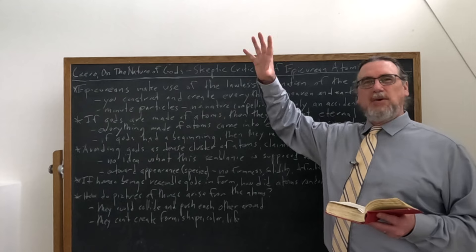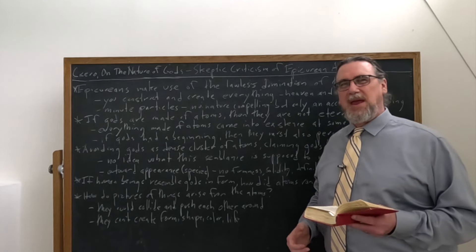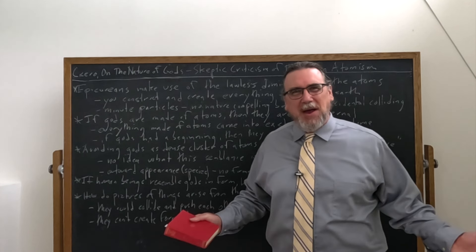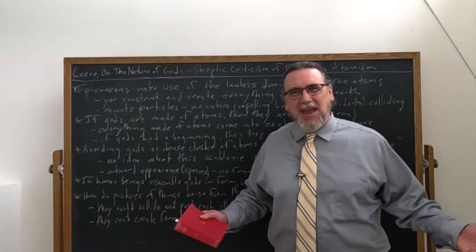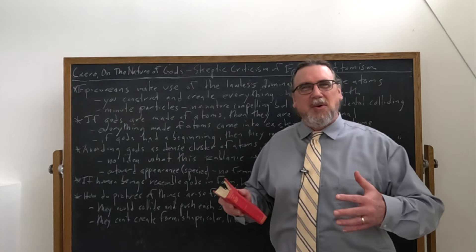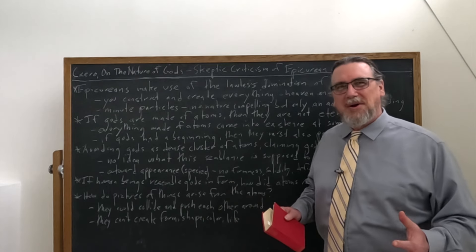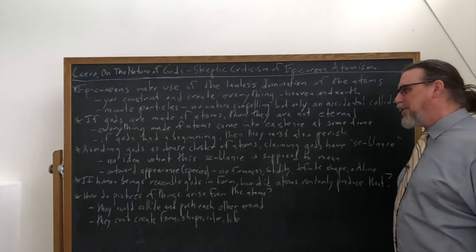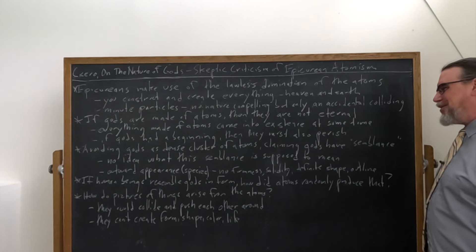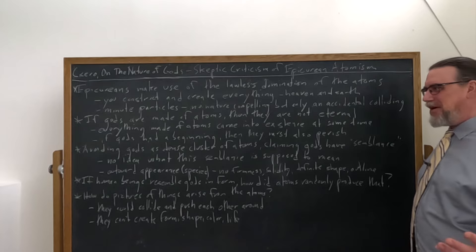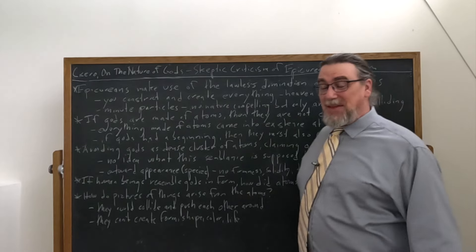But if you want to say that, let's assume that there are gods and they do have this shape that we have. Great. How the hell did human beings come to resemble them? If there isn't any sort of design or law or order to nature, why would random atoms being put together in certain ways give us the shape of human beings?